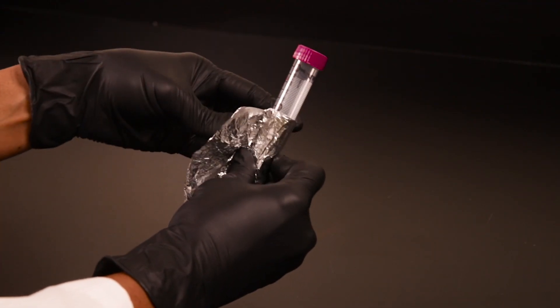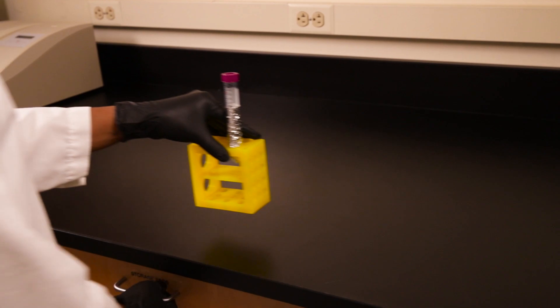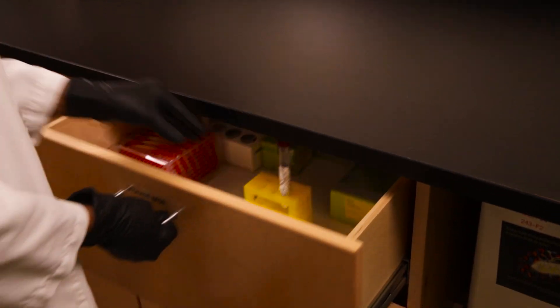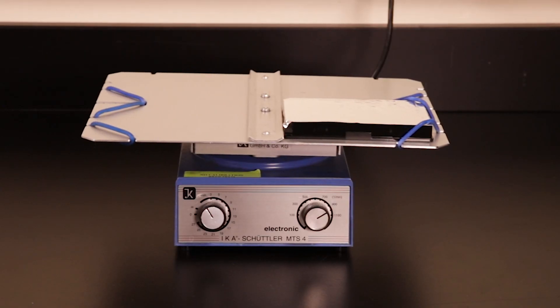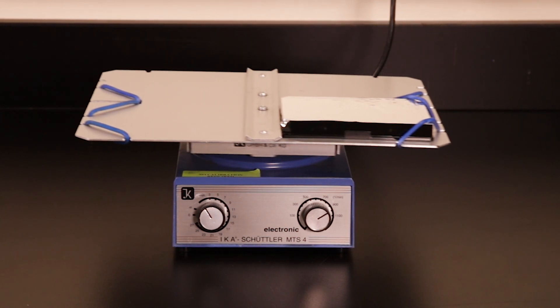To protect the diluted beads, wrap tubes in foil or store in a drawer until they are ready to use. Cover the plate with foil during shaking steps to protect the beads from light.